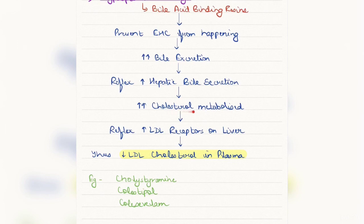This production requires cholesterol as the precursor molecule. Therefore, the cholesterol metabolism increases, and that reflexively produces a positive feedback for the LDL receptors to be expressed more on the liver. These elevated LDL receptors actually catch hold of all the LDL that is present in the plasma and bring it to the liver. This reduces the LDL cholesterol level in plasma, and this forms the hypolipidemic action of bile acid binding resins.